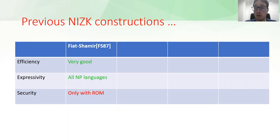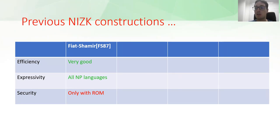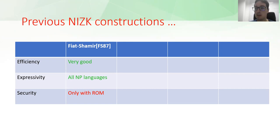Let's move on with an overview of existing NIZK constructions, comparing them in terms of efficiency, expressivity, and security. The first NIZK construction is due to Fiat and Shamir. Their core idea is a compiler that defines a NIZK from a particular class of three-round public coin interactive proofs of knowledge called Sigma Protocols. Their compiler uses cryptographic hash functions, so those NIZKs have all the advantages of the underlying Sigma Protocols—they perform very well in terms of efficiency and expressivity, and they are defined for all NP languages.